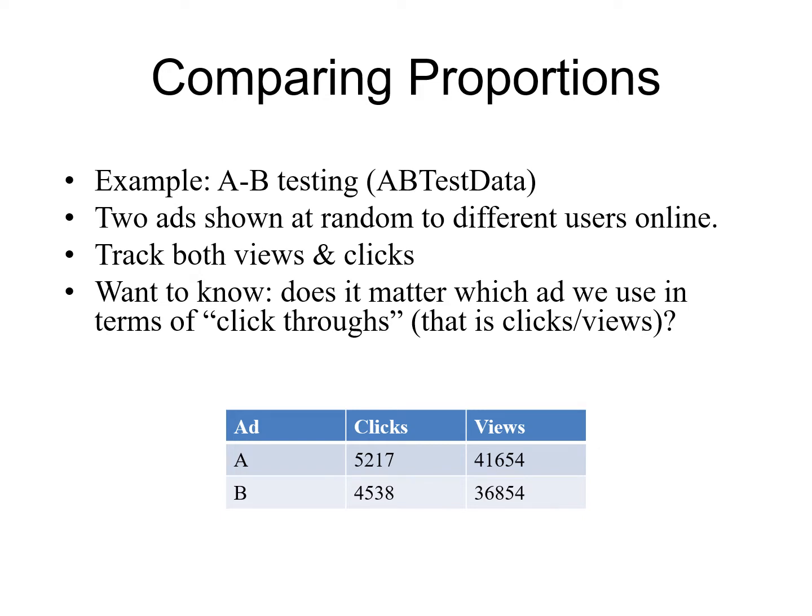We can easily track both the number of views we have per ad and the number of clicks. We just want to know, does it actually matter which ad we use? And if so, then we'd want to focus our efforts on the more successful ad. So here we have the data. If you don't have this in Excel, just go ahead and type this in. Ad A gets 5,217 clicks out of 41,654 views. Ad B gets 4,538 clicks out of 36,854 views. So we need to figure out, is one of these ads significantly more successful than the other?